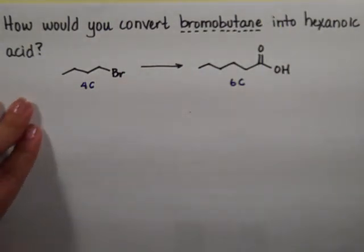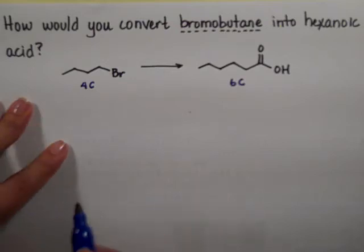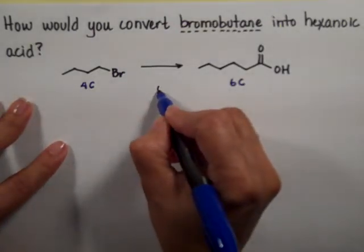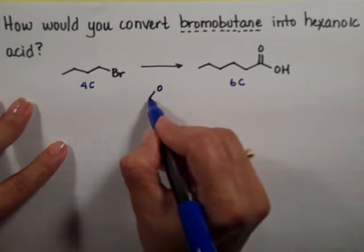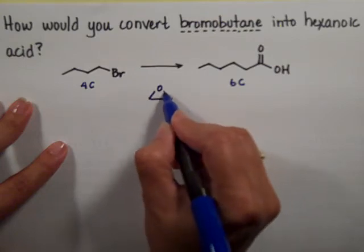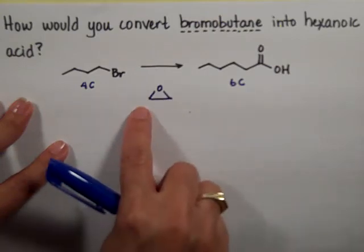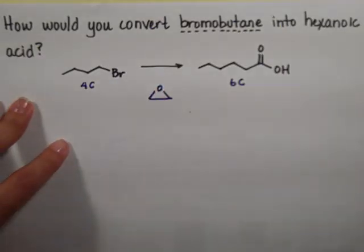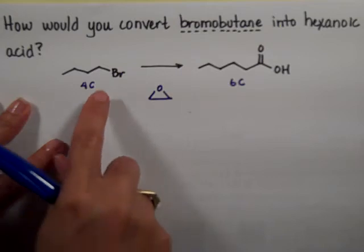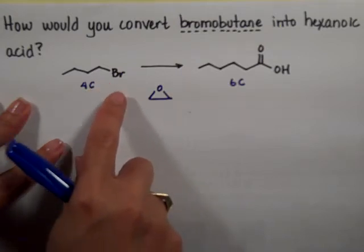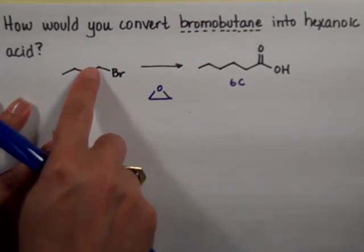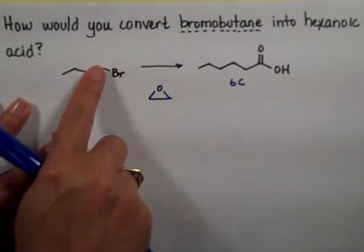Whenever you increase the number by two carbons, the easiest way to do it would be by using an epoxide, because the epoxide has two carbons already and it has the oxygen that can be converted to a carboxylic acid. So we need to attack this carbon of the epoxide with this carbon, which means I need to make this carbon negative.